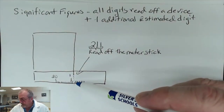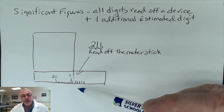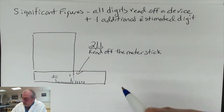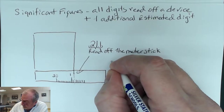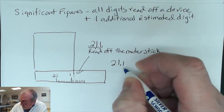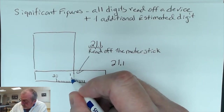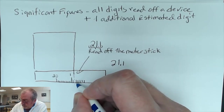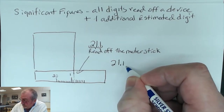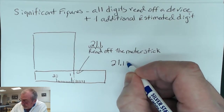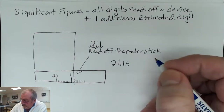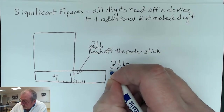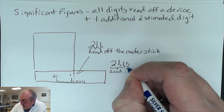What I'm going to do mentally is divide that space and ask how many tenths of a division mark is the object between those two markers. I think it's about halfway, so I read off the device: 21.1 is here and 21.2 is there — it's not quite 21.2, so I'd say 21.15. That gives us the digits we read off the device plus the one estimated digit.